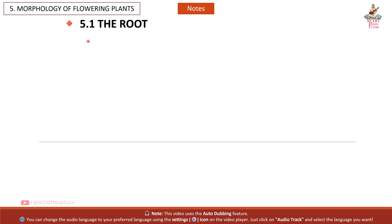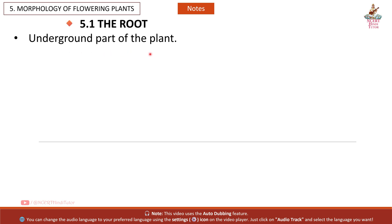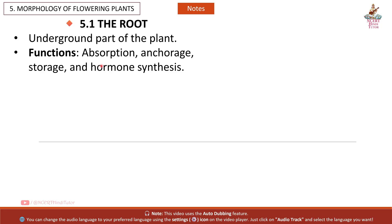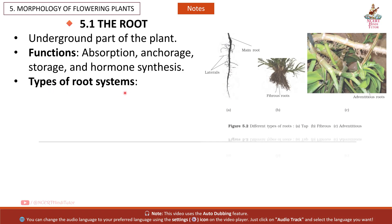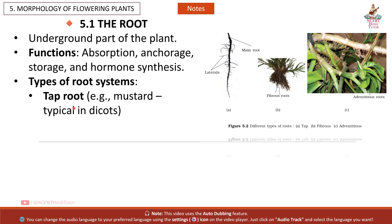5.1 The Root: The underground part of the plant. Functions include absorption, anchorage, storage, and hormone synthesis. Types of root systems: Taproot, e.g. mustard — typical in dicots.